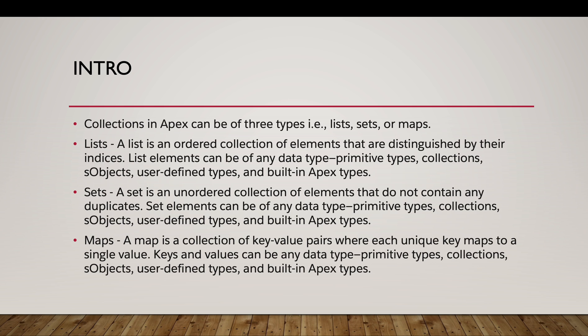We have three types of collections in Apex: lists, sets, and maps. Collections in any programming language are a way data is stored — they are basically containers used to store data in a particular format. The first type is the list collection: a list is an ordered collection of elements distinguished by their indices.